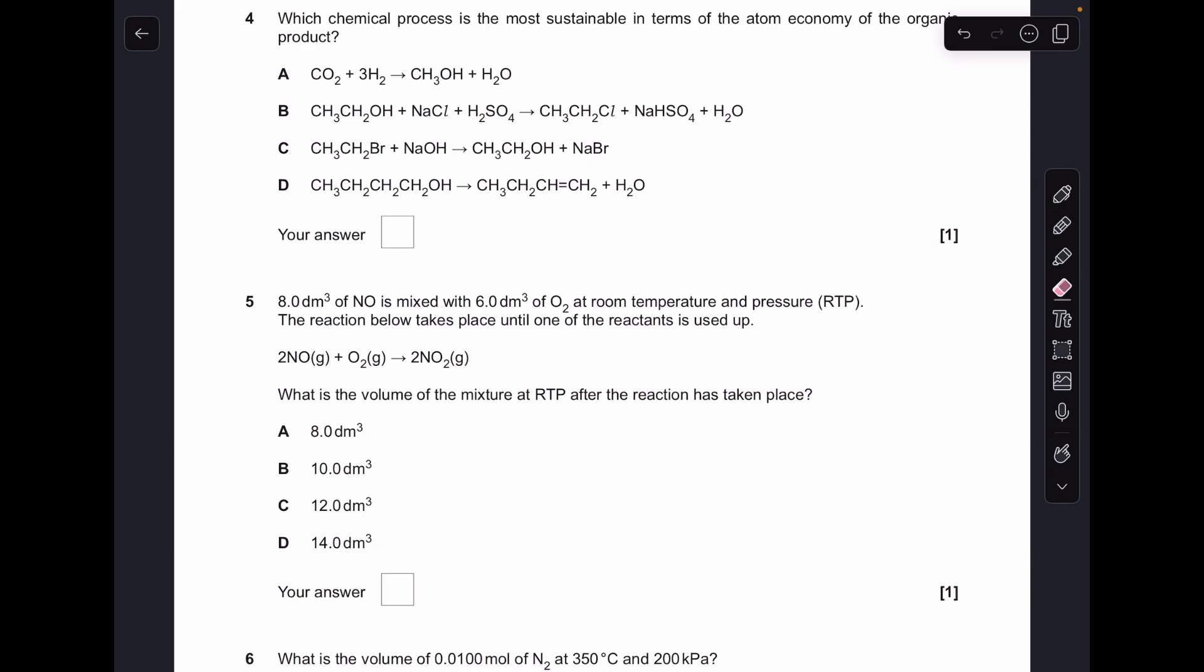Moving on to four, you could if you wanted work out all the atom economies for the four reactions and see which one's smallest, but obviously that's going to take quite a long time. So the other way to do it is just if you look at the waste product, anything with heavy waste products can't be the answer, so B and C are definitely not right.